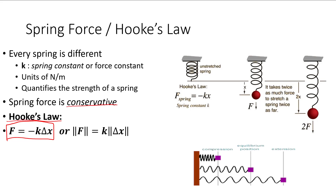The spring force is conservative, which means it conserves energy, and it always tries to pull the object back to the equilibrium position, whether you extend it or compress it. For this reason, the spring force is called a restoring force, because it's always trying to bring the object back to the center. This is also why we have a negative sign in our spring force equation — when we displace the spring to the right, the force is to the left, so those vectors point in opposite directions, and the negative sign accounts for that.